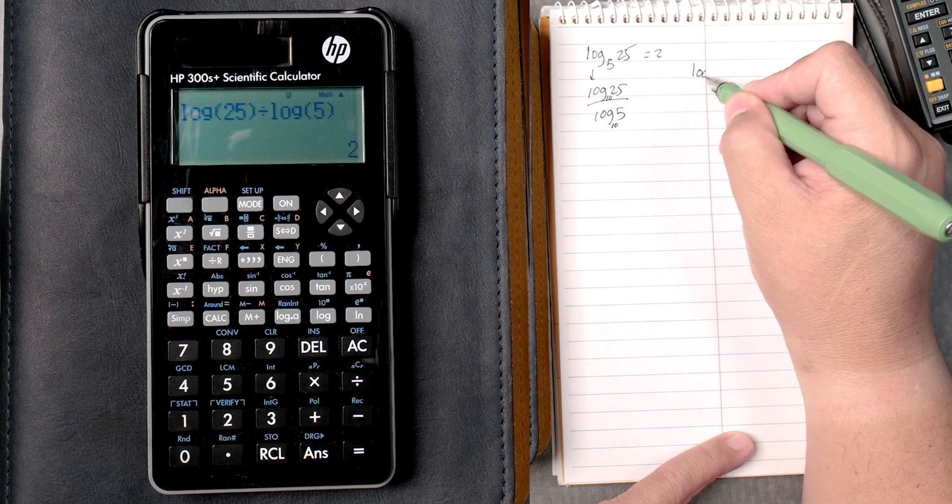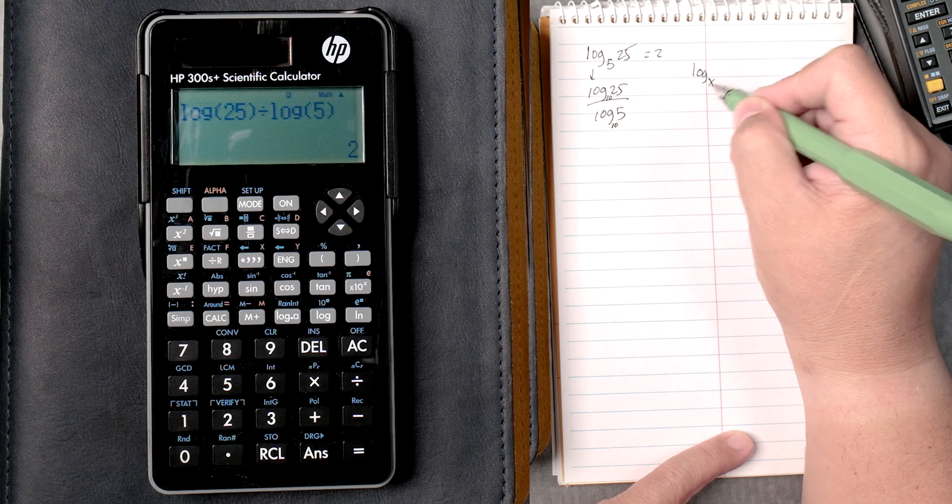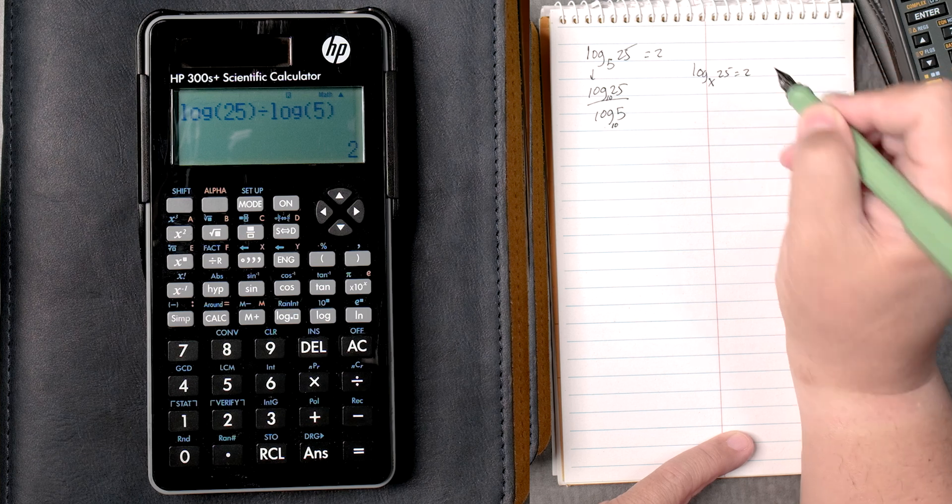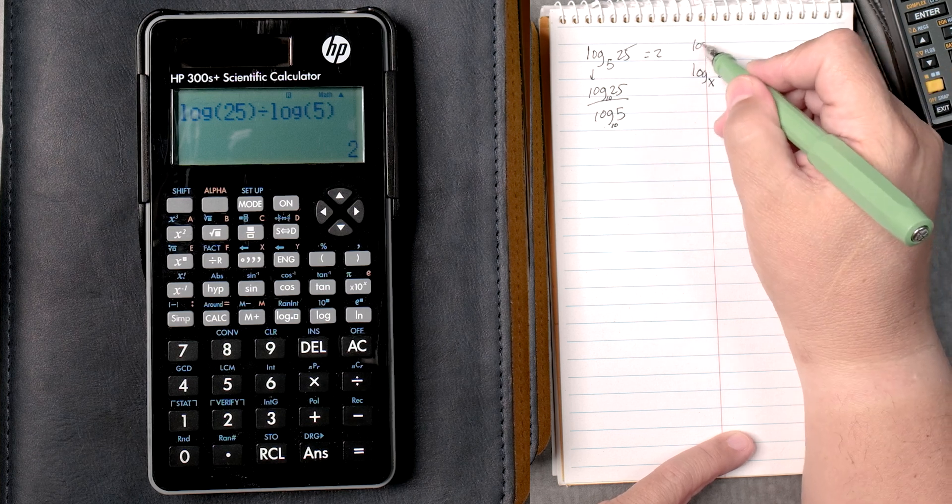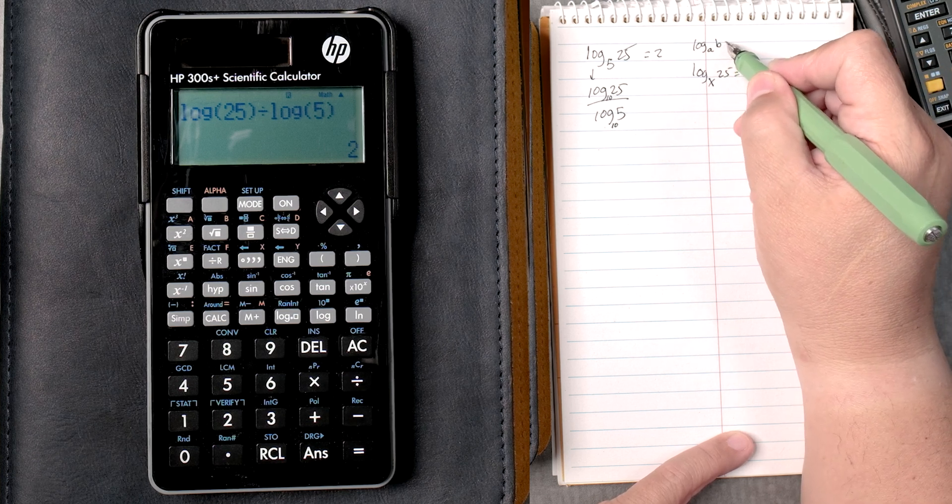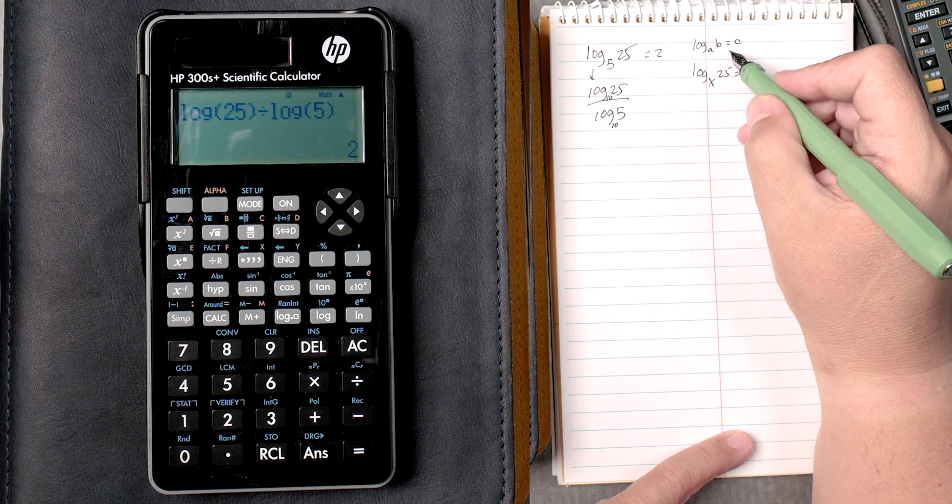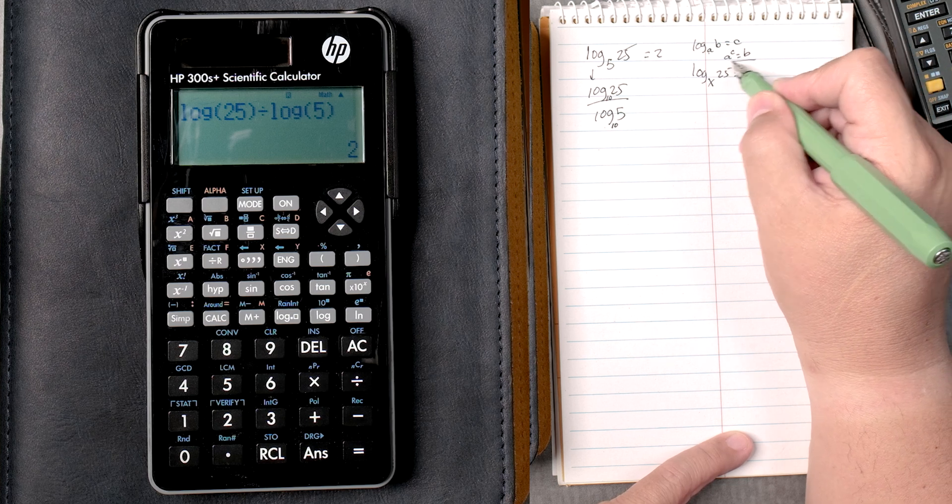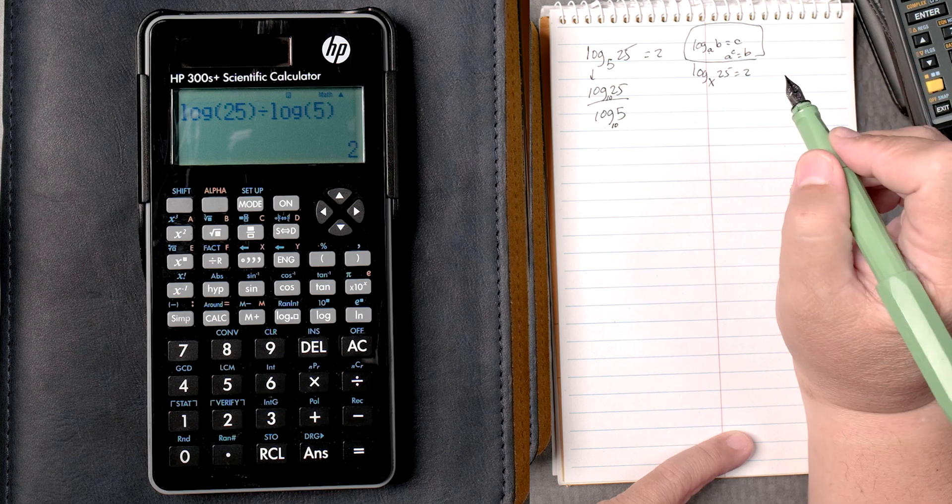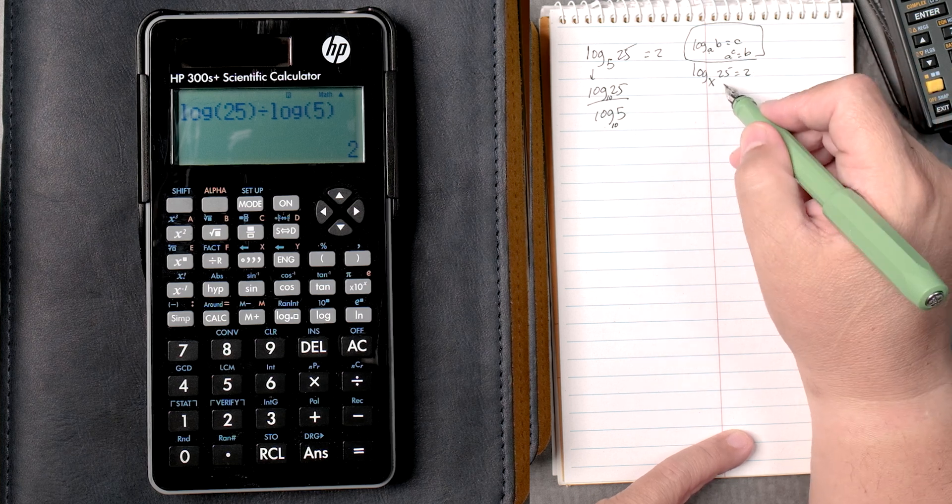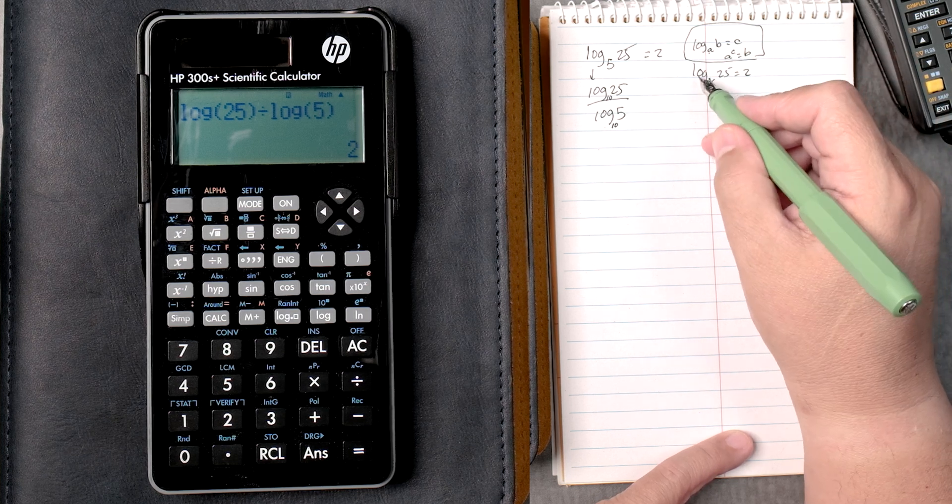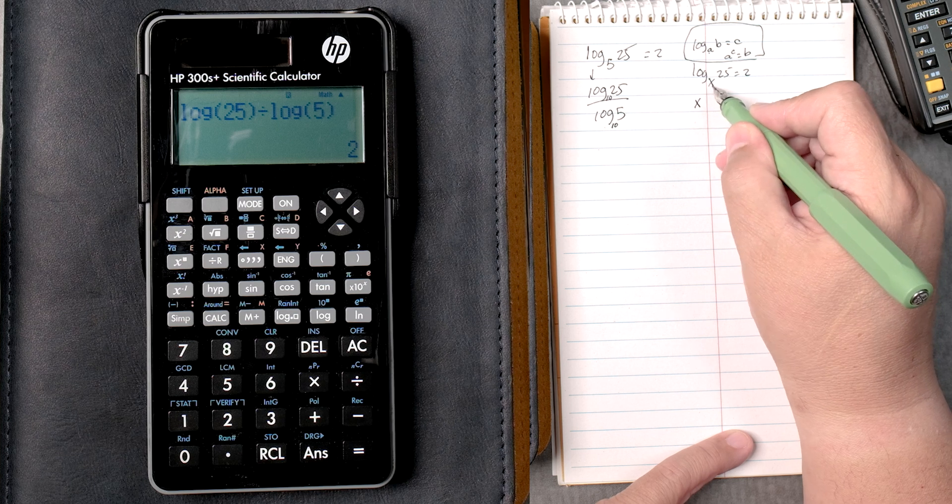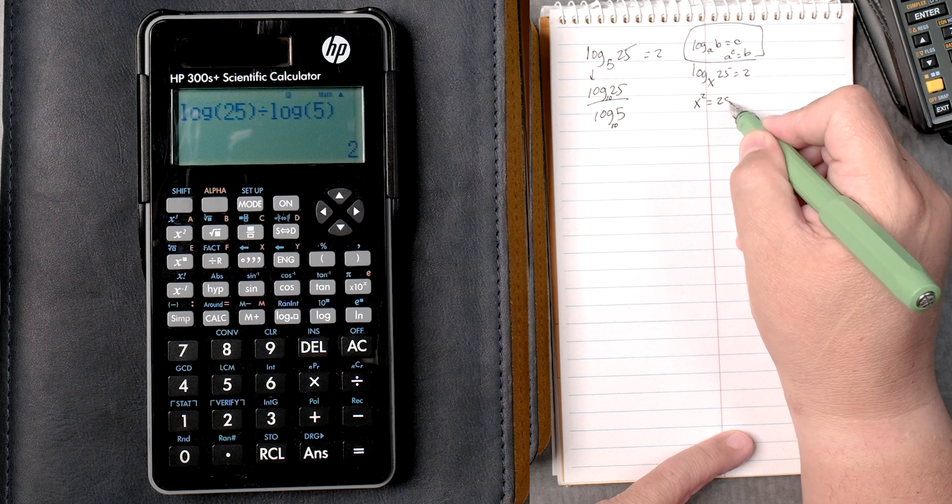Let's say you had the log of base x, 25 equals 2. There's a rule that says that the log of a, b equals c, which is the same thing as a to the c equals b. This rule is important because I can rearrange this and get rid of the log, which is x squared equals 25.